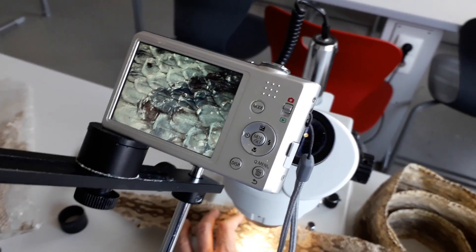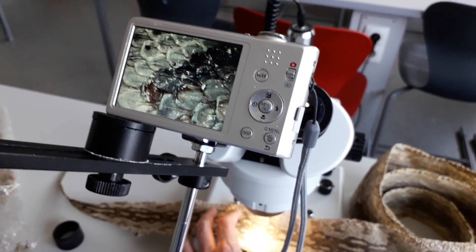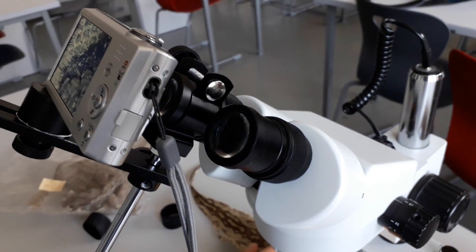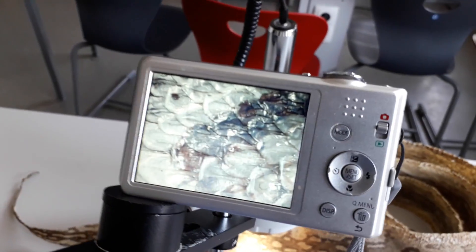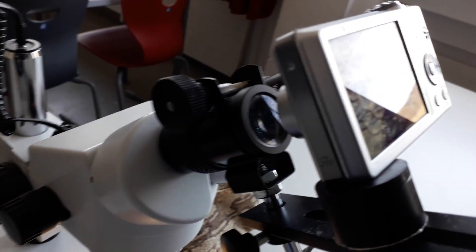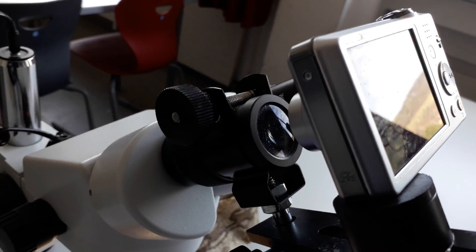Everything's now set up. I'm getting a live image using so-called afocal photography, which means taking a picture directly through the eyepiece of a microscope. That's what I see now - the snake leather. It looks quite magnified, and you can see the individual scales of the snake.